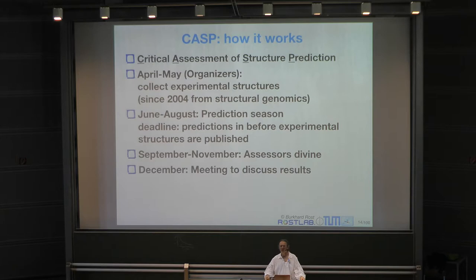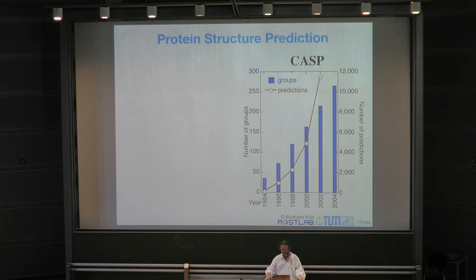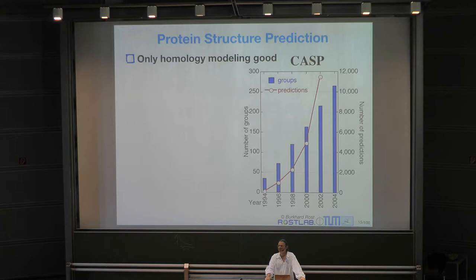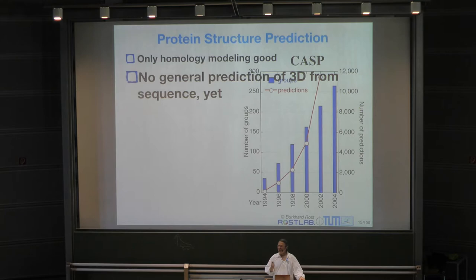CASP results show the number of participating groups increased steadily through 2004. The essential finding from the first 20 years of CASP is that the only approach that really works is comparative modeling or homology modeling. There is no general 3D structure prediction from sequence alone through molecular dynamics — it essentially fails. The instructor will cover how structures are experimentally determined before discussing comparative modeling.